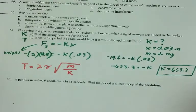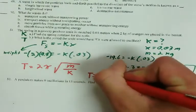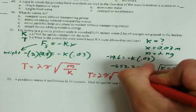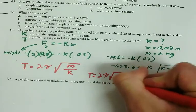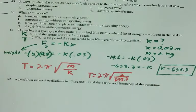Then, we're ready for part B. Part B is to find the period. Period is equal to 2 pi times the square root of the mass, which is 2, over k, which is 653.3.